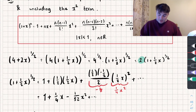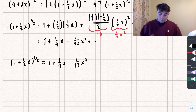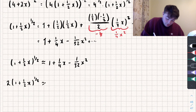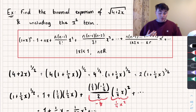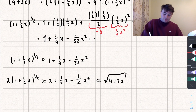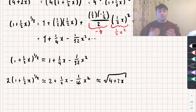The original expression was 2 times this, so multiplying both sides by 2: √(4 + 2x) ≈ 2 + ½x − (1/16)x². Hopefully this video was useful — if it was, like, subscribe, and share, and go over to my channel for tons more maths tutorials. Thanks!